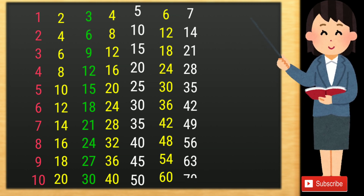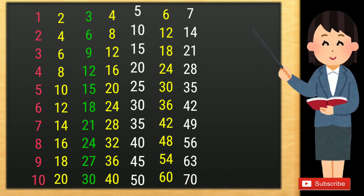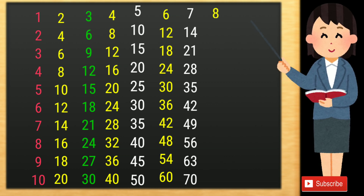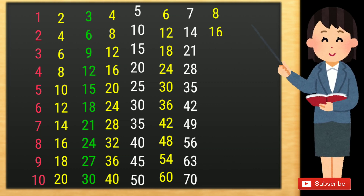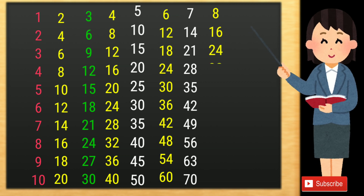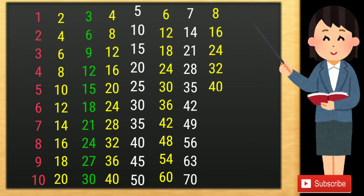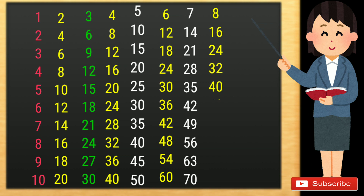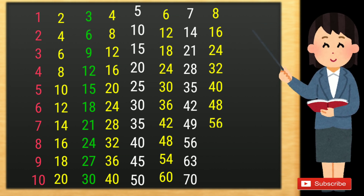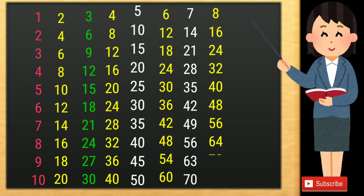7 10s are 70. 8 1s are 8, 8 2s are 16, 8 3s are 24, 8 4s are 32, 8 5s are 40, 8 6s are 48, 8 7s are 56, 8 8s are 64, 8 9s are 72.